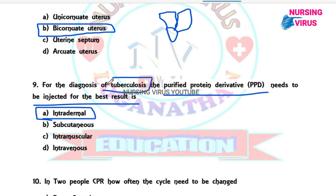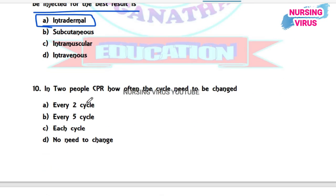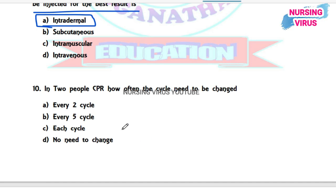Question 10: In two-person CPR, how often does the cycle need to be changed? The options are every two cycles, every five cycles, each cycle, or no need to change. When two persons are available for CPR, the changeover should happen every five cycles.